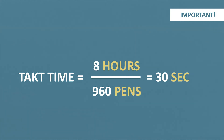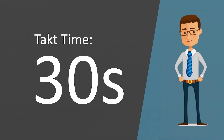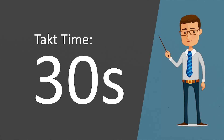In this case, the takt time is eight hours of working time divided by 960 pens as requested by the customer. In other words, the takt time is 30 seconds per pen. Hence, in order to fulfill the customer request of 960 pens, we have to produce one pen every 30 seconds for the next eight hours.